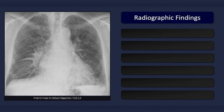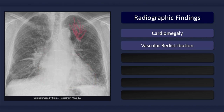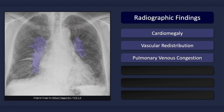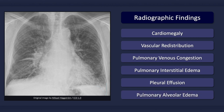Congestive heart failure can produce a myriad of findings on plain chest radiography. Which findings are present depends on the severity of the patient's condition. On an erect posteroanterior chest X-ray, suggestive findings include cardiomegaly, vascular redistribution — that is, the cephalization of blood flow — pulmonary venous congestion, pulmonary interstitial edema, pleural effusions, and in more severe disease, alveolar edema, which is not clearly evident on this radiograph.